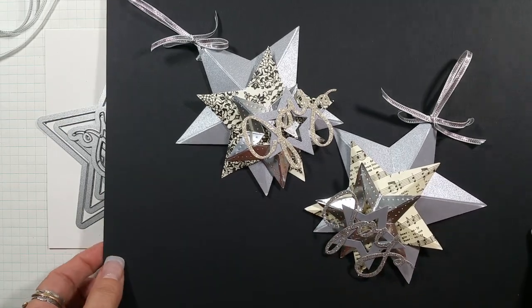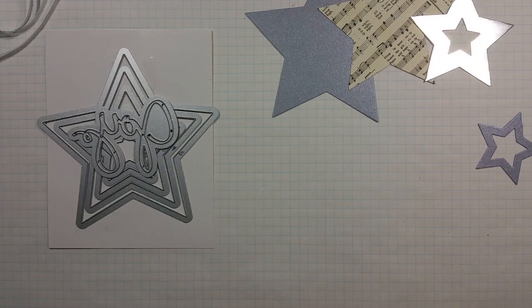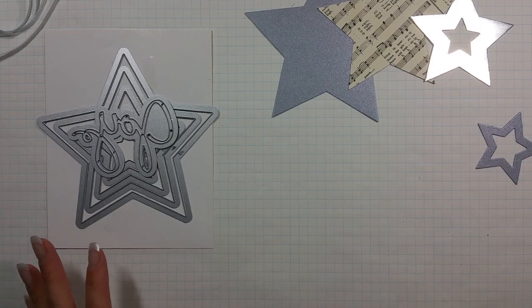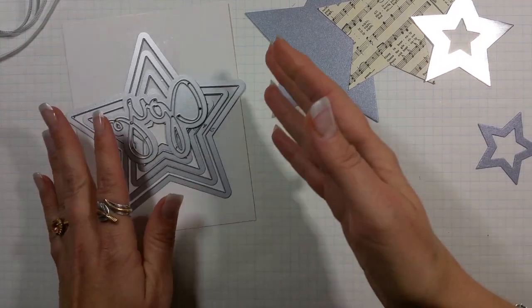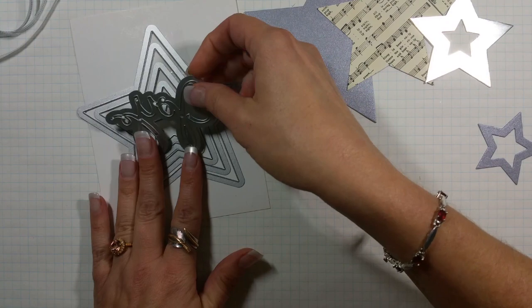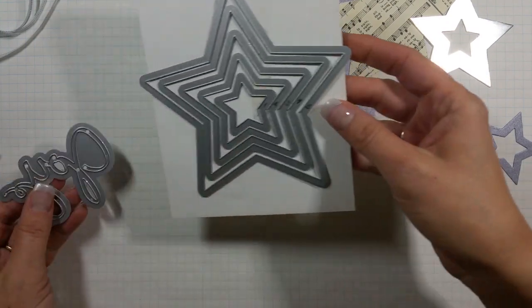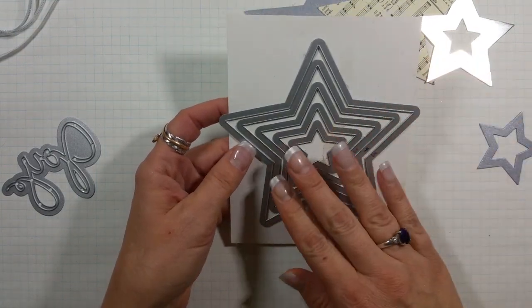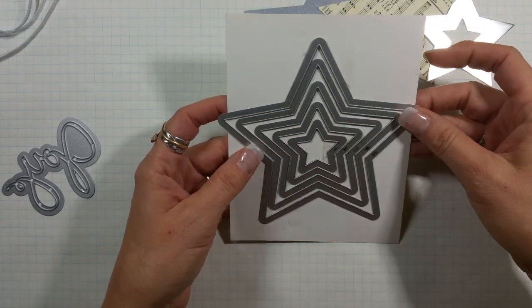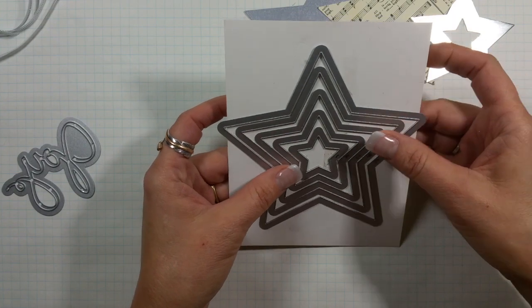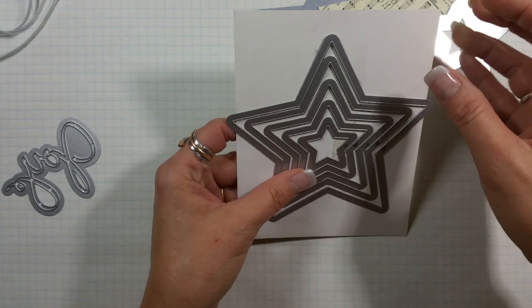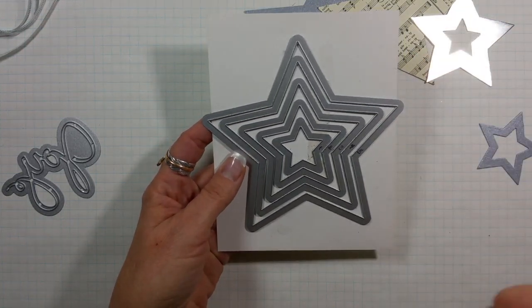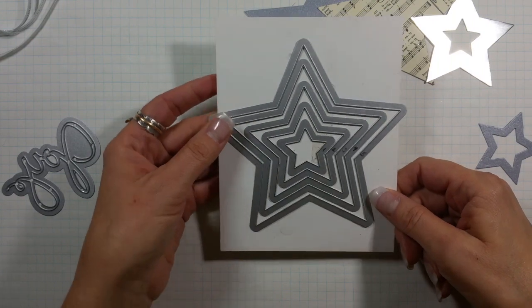So let's get started. All of my supplies will be Stampin' Up. I am a Stampin' Up demonstrator, however there's nothing here that you can't find somewhere else. For example I'm using our nested stars framelits here and the reality is that there's a lot of beautiful nested framelits out there - My Favorite Things, Simon Says Stamp, Spellbinders - they all make beautiful nested dies. So don't feel like you have to have Stampin' Up to make this ornament.